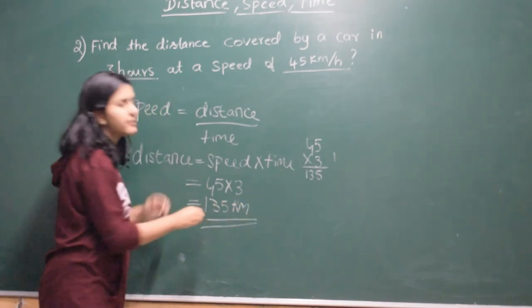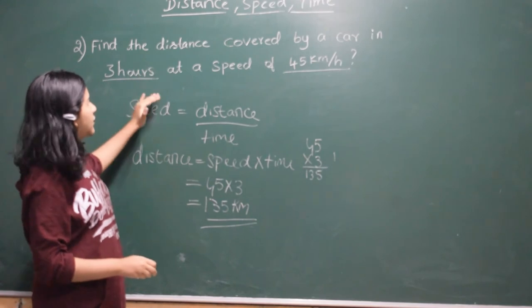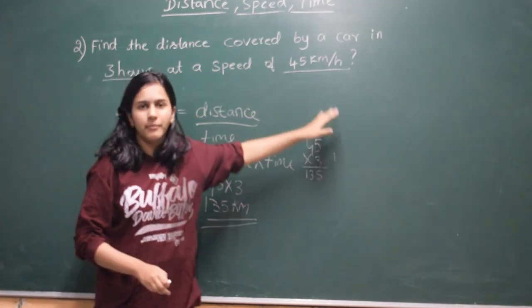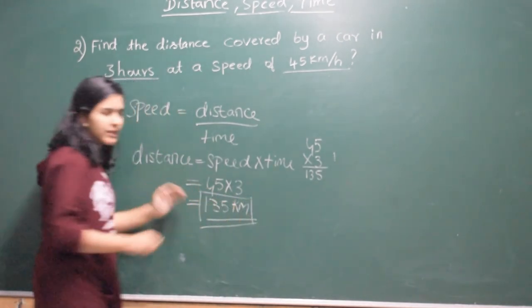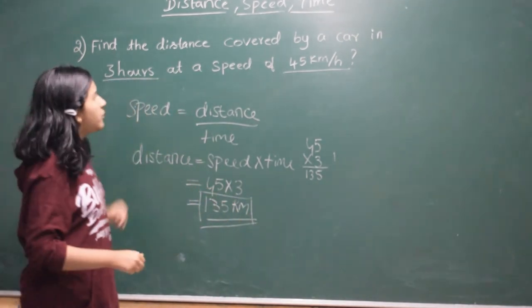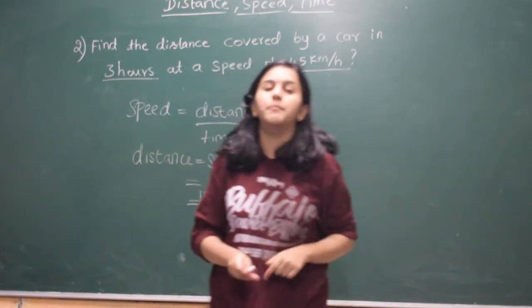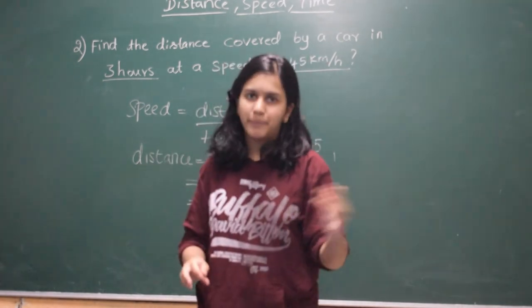So that is the distance covered by that car in 3 hours at a speed of 45 km per hour. So that distance is 135 km. So I hope you understood this problem. Watch our previous video also to know about the speed problem.